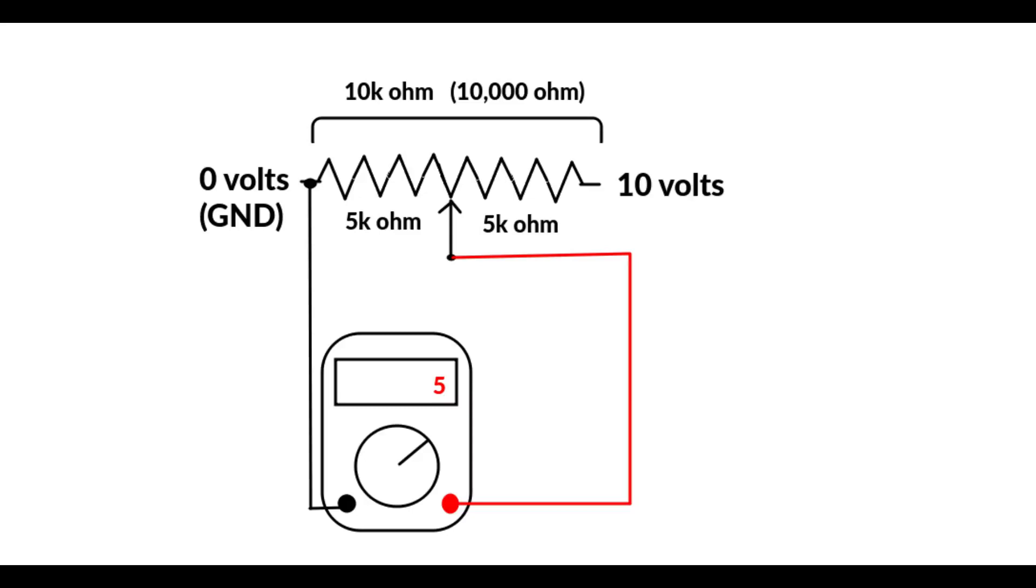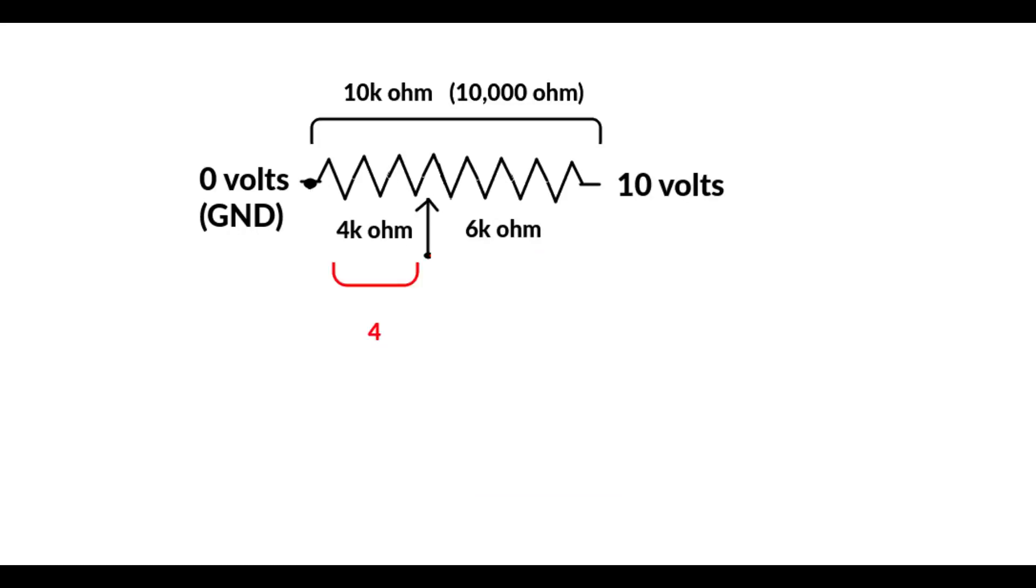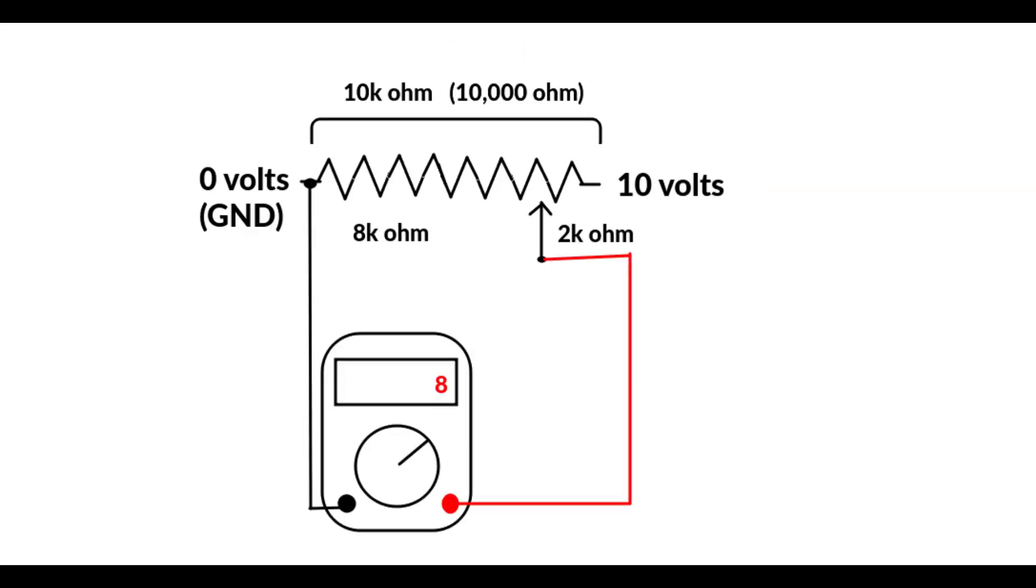Instead of having to move our leads from one tap to another, we can just move the wiper over a little bit. And here we can have 4 kilo ohms on the left and 6 kilo ohms on the right, and our voltage is going to be 4 volts. So that's one thing to notice is that the resistance between the left outside lead and the wiper plus the wiper to the right outside lead are always going to add up to the total resistance of the potentiometer, in this case 10 kilo ohms. We can move the wiper a bit to the right and get 8 kilo ohms on the left and 2 kilo ohms on the right to get 8 volts.